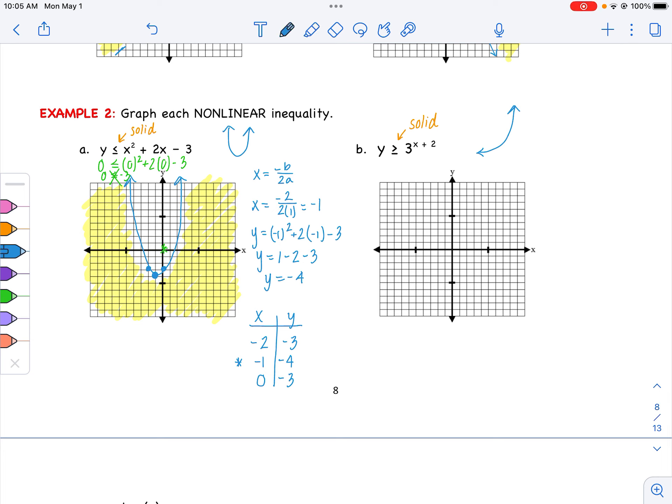Next shape here we have is our exponential. It's going to be a solid curve, and then we're going to be shading. Little reminder, our original graph is 3 to the x. Our two points that we're guaranteed to have on this exponential is 0, 1 and 1, 3. But this plus 2, which remember a plus 2 tells us go to the left 2, which is going to change our x values to be negative 2 and negative 1, and it keeps the same y values.